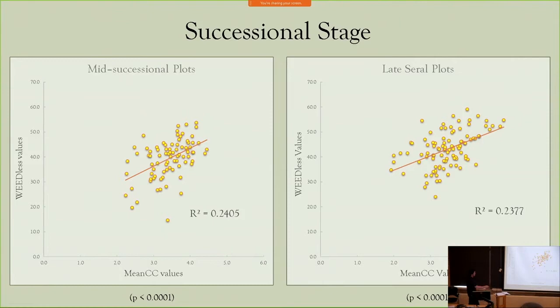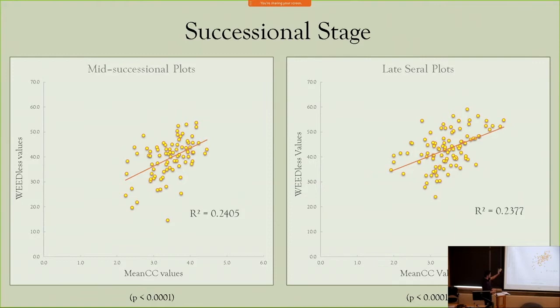We performed a regression analysis of the plots, which I think can be an important tool for informing management across the city. Higher scores on both axes indicate higher quality of native and non-native vegetation. Plots in the upper regions would be appropriate for protection or conservation. Plots scoring poorly on the weedless scale but somewhat well on the mean CC scale would be appropriate for invasive species removal. Plots scoring relatively high on weedless but lower on mean CC would be appropriate for habitat restoration or planting to increase the quality of native species.